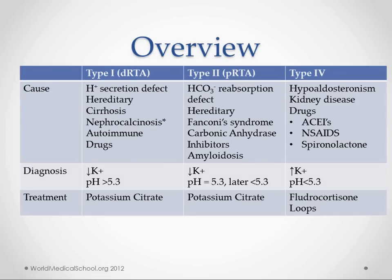So this is the main overview. Type 1 is distal and it's a hydrogen problem — it might be hereditary, from cirrhosis, nephrocalcinosis (as cause or effect), autoimmune problems, or drugs. Type 2 is proximal and it's a problem with reabsorption of bicarb — could be Fanconi syndrome, drugs, or amyloidosis. Type 4 is a problem with the adrenal glands, usually hypoaldosteronism, or kidney disease or drugs. On diagnosis: hypokalemia means type 1 or 2; a higher urine pH in a hypokalemic acidotic patient is suggestive of type 1. Treat with potassium citrate for type 1 or 2, and fludrocortisone plus loop diuretics for type 4.